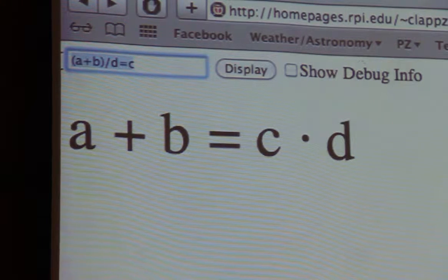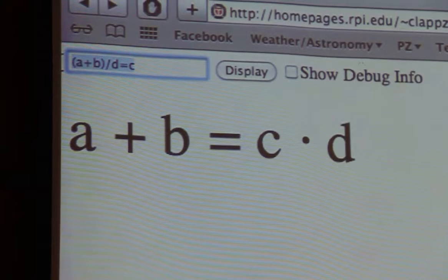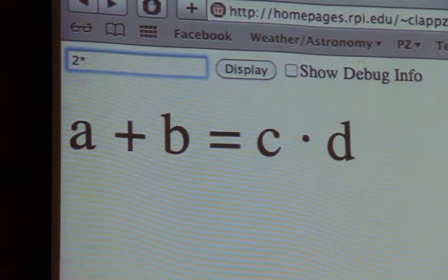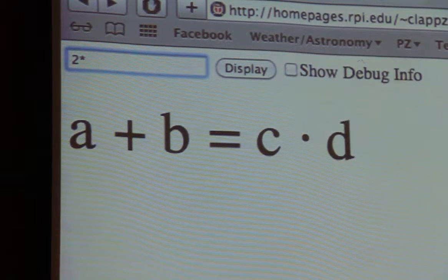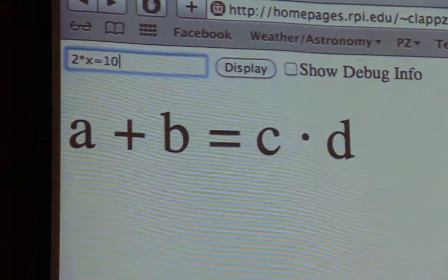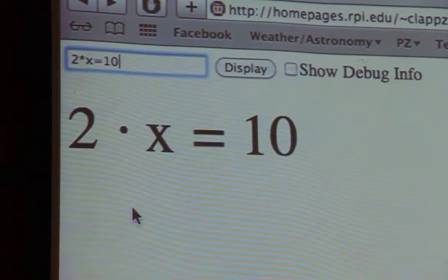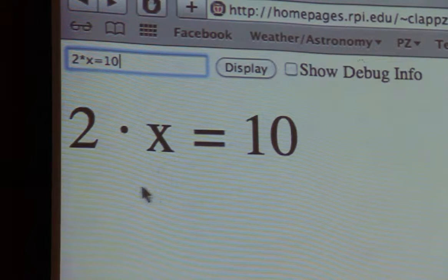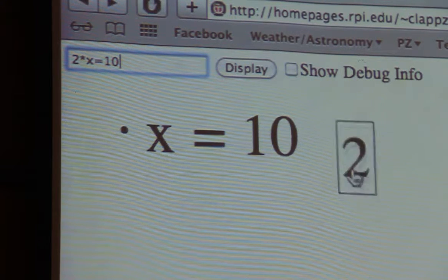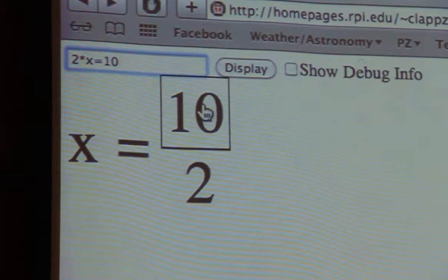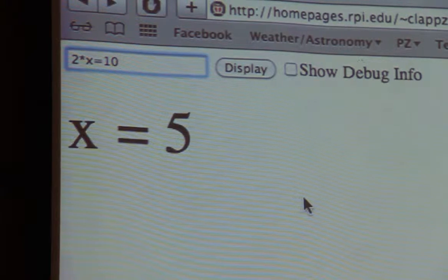So the biggest change between last semester and this semester so far has been the addition of evaluation of actual numbers. So if we do something like this, that's a really hard equation. I can't do that on my own, so I need to use this tool to solve it. So you can divide the two over. Oh, ten halves. I know that. Doesn't that simplify to something else? Oh, it's five. There you go.